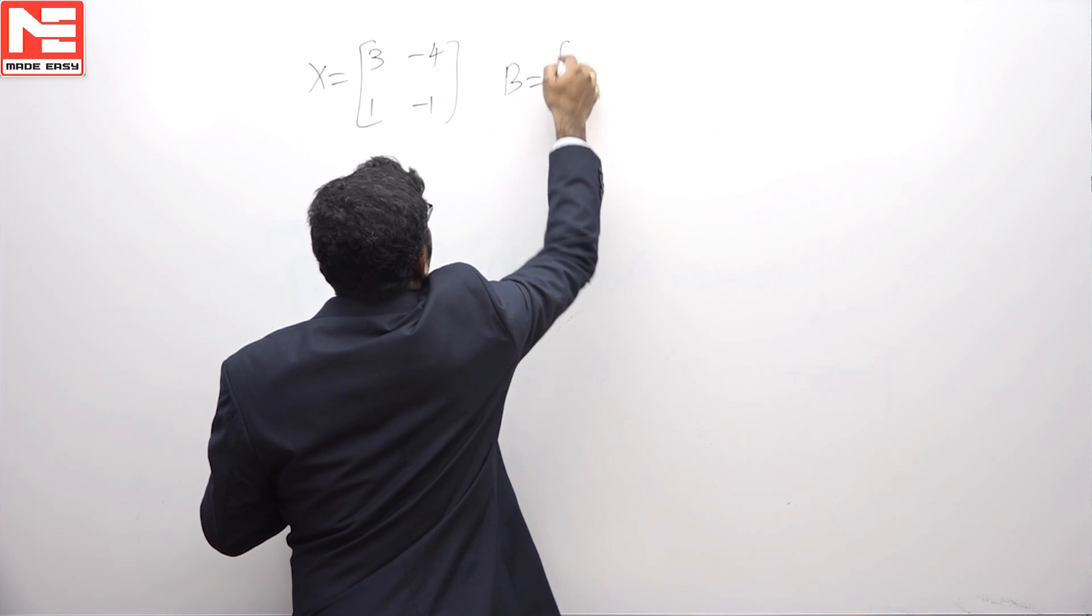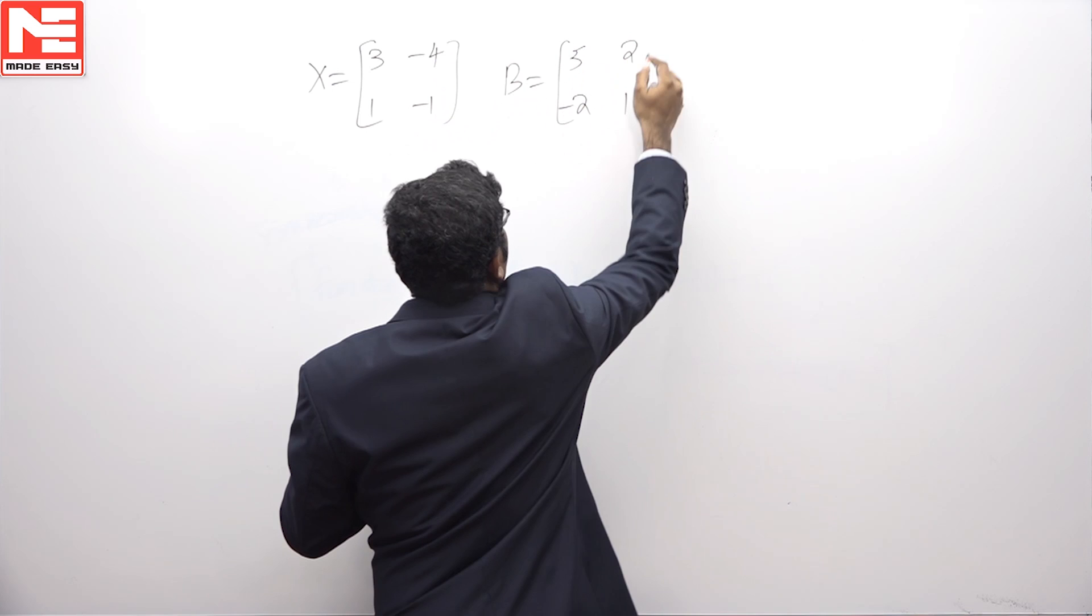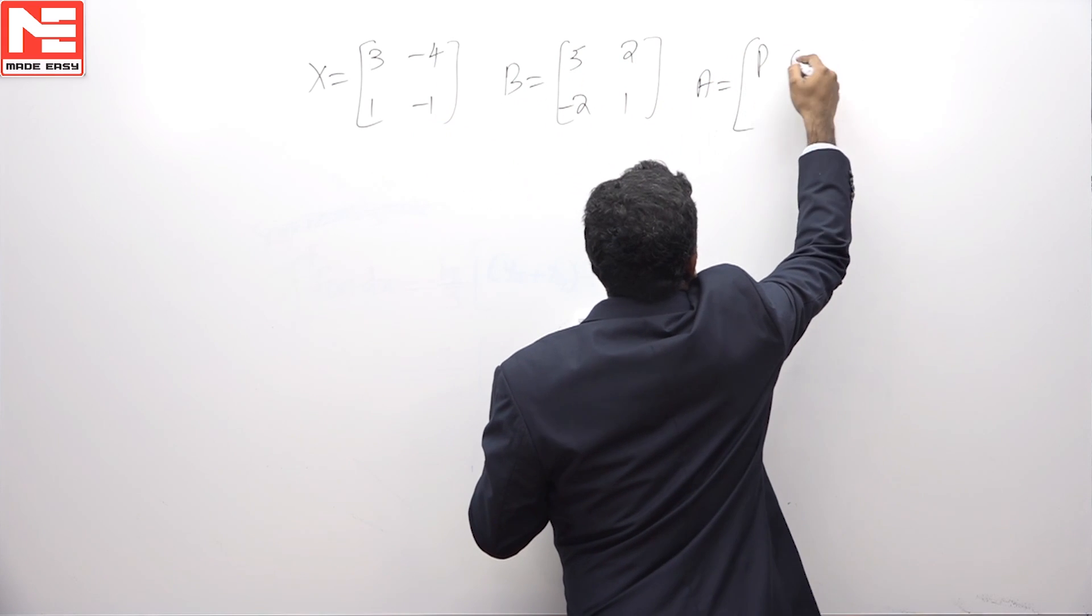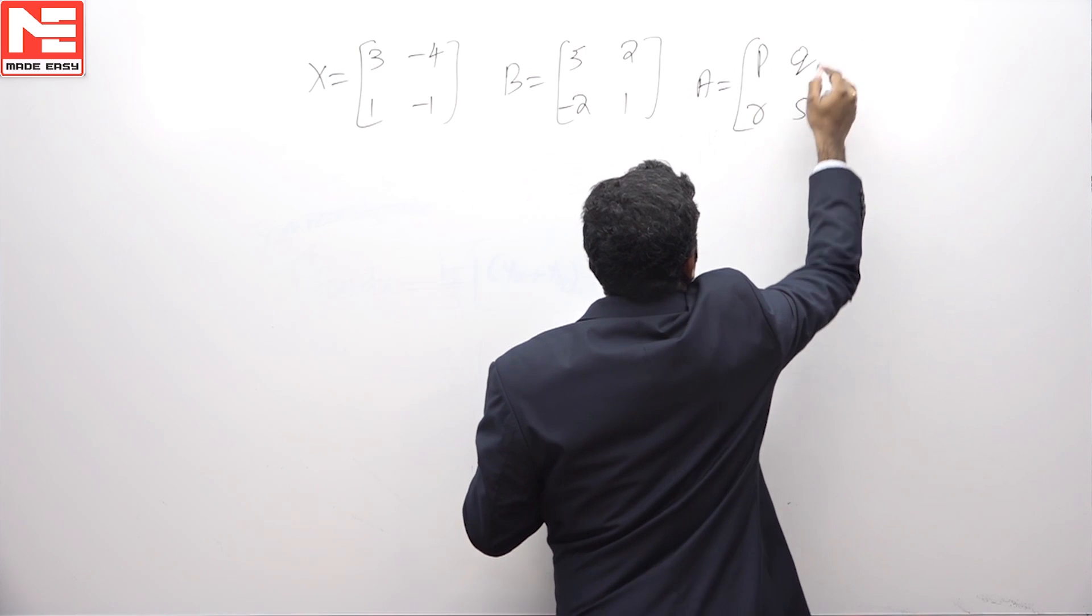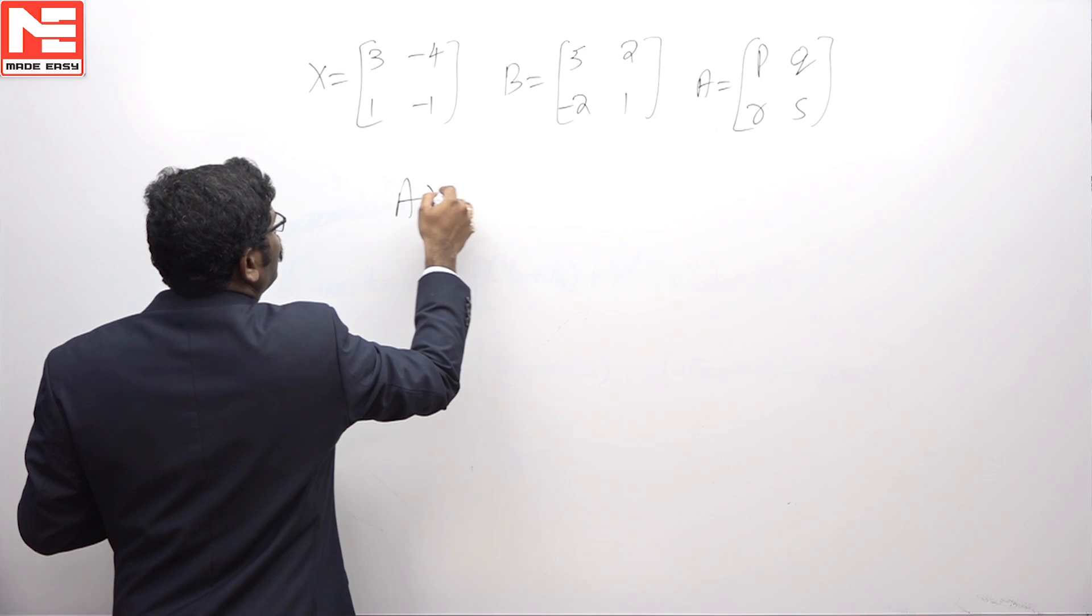Matrix B is 5, 2, minus 2, 1. Matrix A is P, Q, R, S, given that AX equals B.